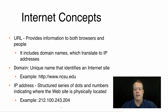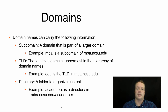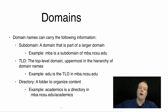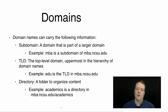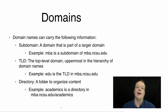The domain is the unique name that identifies an internet site — for example, www.ncsu.edu. Domain names actually carry a lot of information. There is a subdomain: www is a subdomain of www.ncsu.edu, just as MBA is a subdomain of mba.ncsu.edu. The top-level domain is the thing at the very end — something controlled outside the organization. NC State controls all the ncsu.edu domains, but they don't control .edu. That top-level domain is controlled by another organization, and you have to go through a domain registrar to get access to a domain within that particular top-level domain.